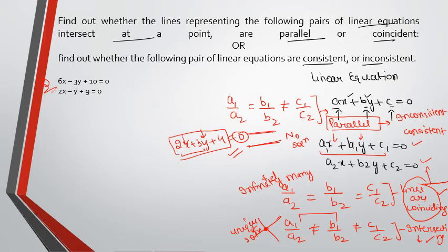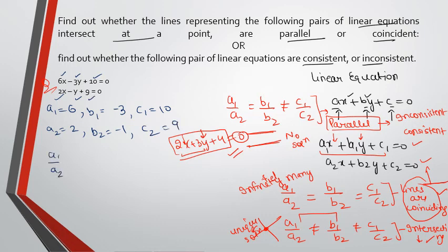So again, here a1 is what? 6. b1 is coefficient of y. It's minus 3. c1 is constant term. a2 is what? Coefficient of x. In another equation, coefficient of y is b2. And constant term is c2. So find out the ratios.